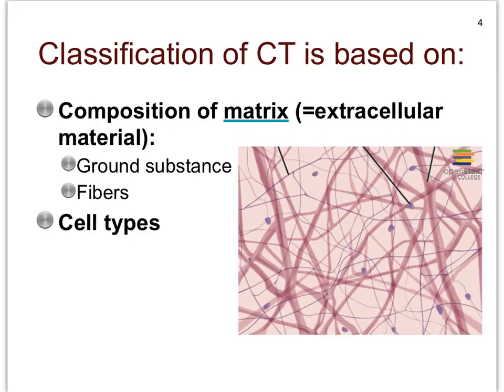The connective tissues are also classified based on just two criteria, but they're very different from those of the epithelial tissues. In the case of the connective tissues, we actually look at what makes up the matrix — that is, the extracellular material — and we also look at what kinds of cells are present. So what is the matrix made up of? What kinds of cells are present? Let's focus on the composition of the matrix.